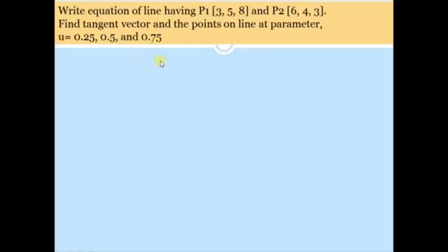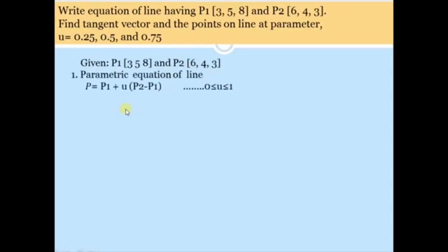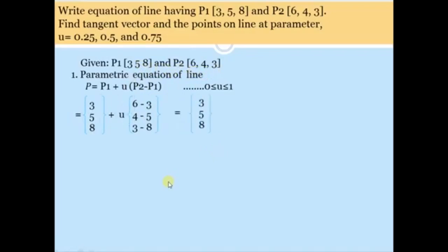Given P1 = (3, 5, 8) and P2 = (6, 4, 3), the parametric equation is P = P1 + u(P2 − P1), with u between 0 and 1. Writing in column vector form: P = [3, 5, 8] + u × [6−3, 4−5, 3−8] = [3, 5, 8] + u × [3, −1, −5]. This is the parametric equation of the line.